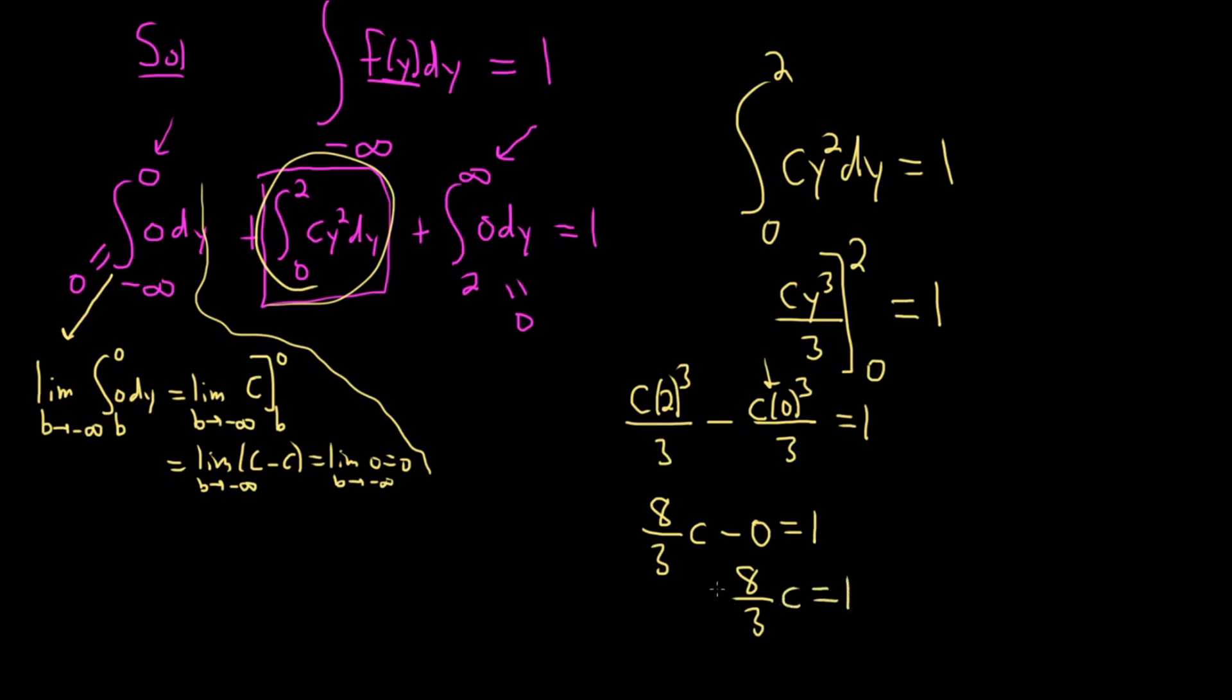The last thing to do is solve for c. Maybe multiply by the reciprocal: 3 eighths. So c is equal to 3 over 8. And notice it's greater than or equal to 0, so it agrees with what we were talking about at the beginning.